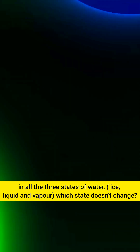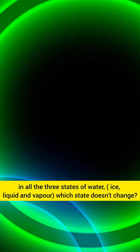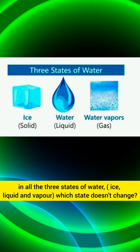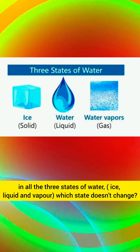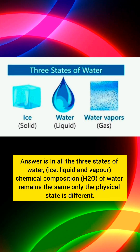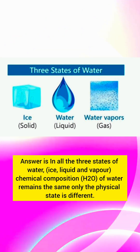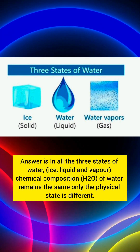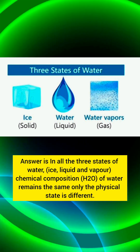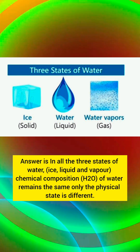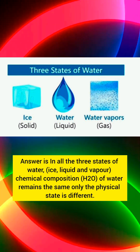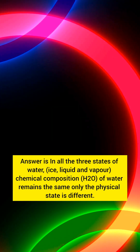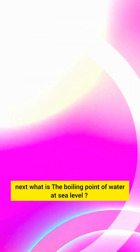In all the three states of water — ice, liquid, and vapor — which state doesn't change? Answer: In all the three states of water, the chemical composition H2O of water remains the same; only the physical state is different.